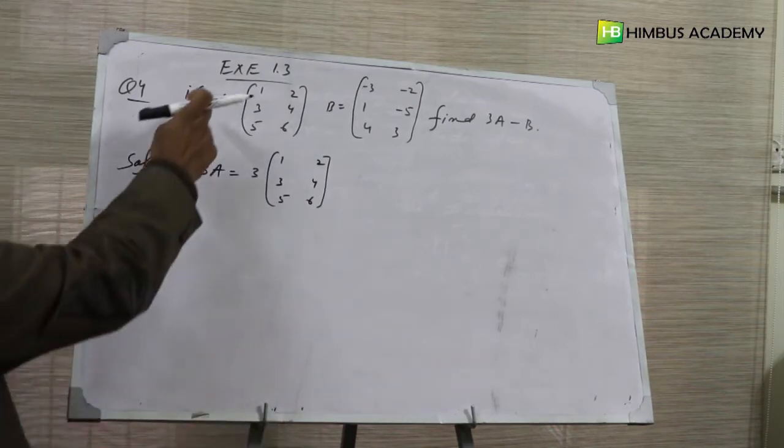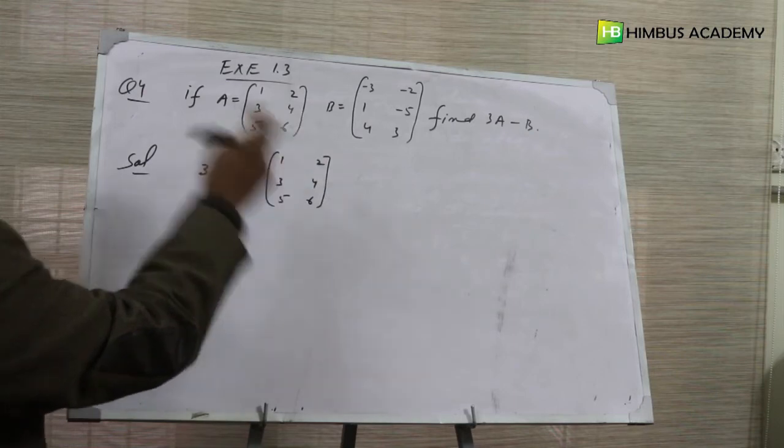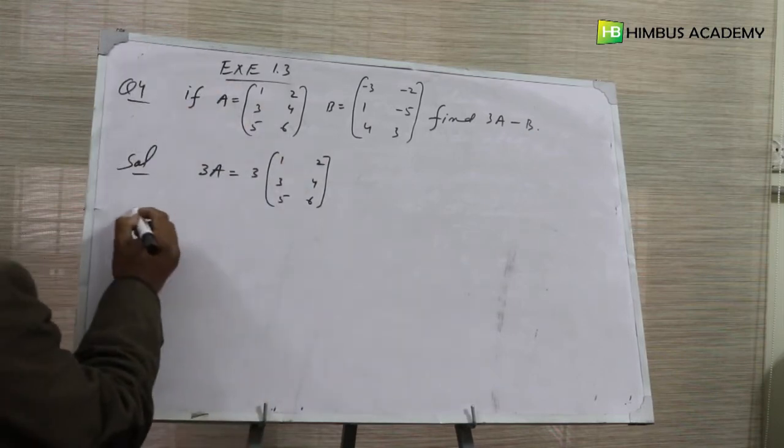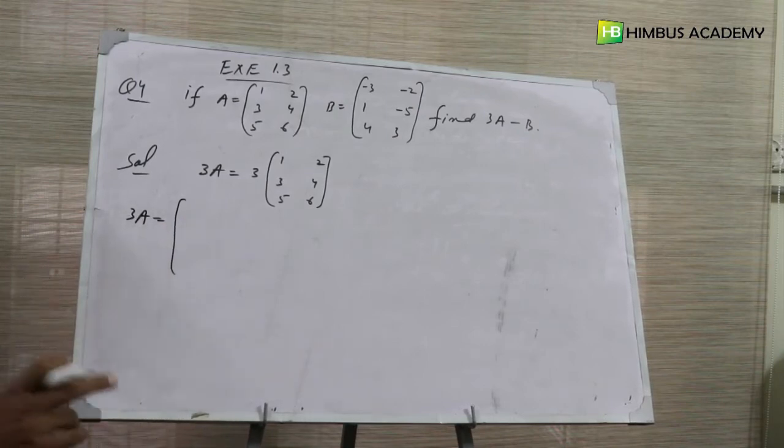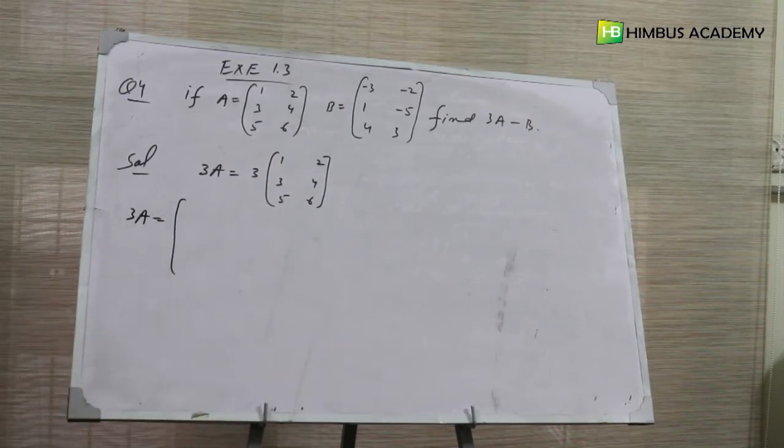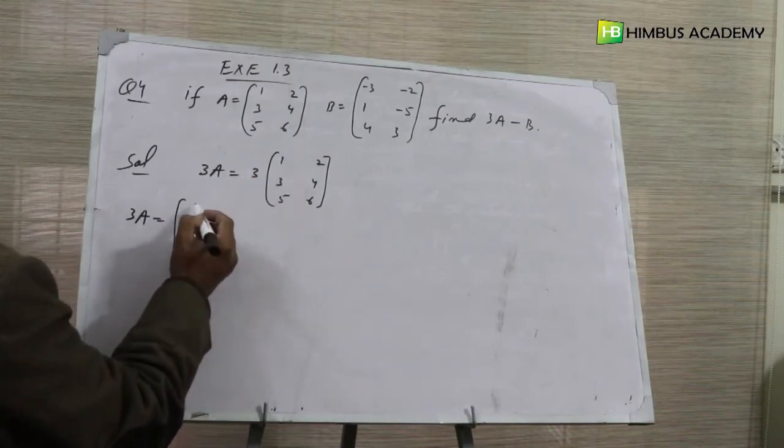A is equal to this, 3A is equal to 3 multiply this. As we learned in the topic multiplication of matrix by a real number, the real number 3 will multiply with the matrix. 3 will multiply with each element.